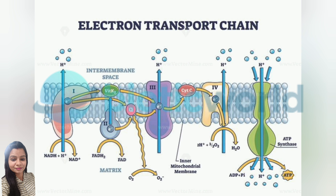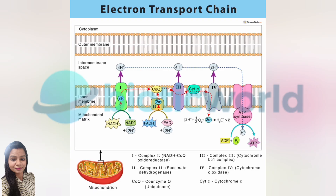Let's break it down. The process starts when NADH and FADH2, which were created earlier in cellular respiration, donate electrons to the electron transport chain. NADH donates its electrons to Complex 1, known as NADH dehydrogenase. Here, electrons move through the complex and are transferred to coenzyme Q, reducing it to ubiquinol COQH2. This step also pumps protons across the inner mitochondrial membrane, creating a proton gradient.